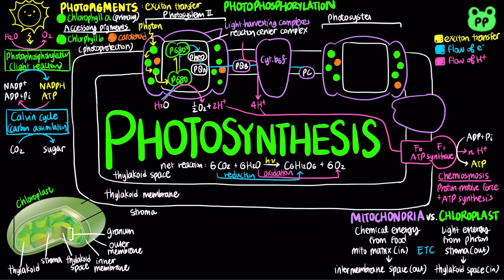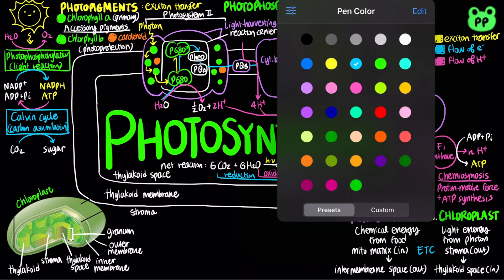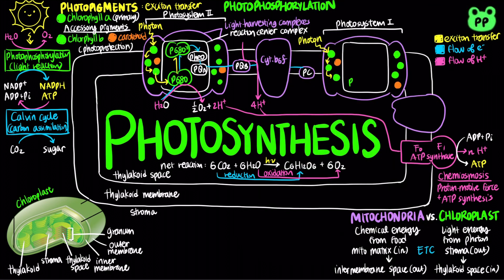Photosystem I involves similar events as Photosystem II. A photon strikes the light-harvesting complex, exciting a photopigment. Light energy is relayed among several photopigments through exciton transfer until it reaches P700 in the reaction center complex. The excited P700 then donates electrons to the primary electron acceptor A0, which is homologous to pheophytin in Photosystem II.